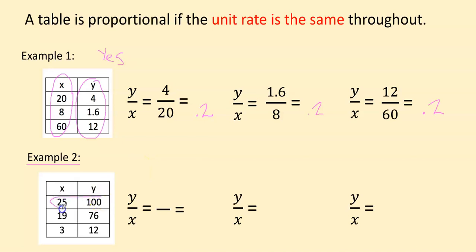All right, in the first example, the y is 100. That goes at the top. The x is 25. And I already know this one. 100 divided by 25 is 4 because 4 times 25 is going to 100.